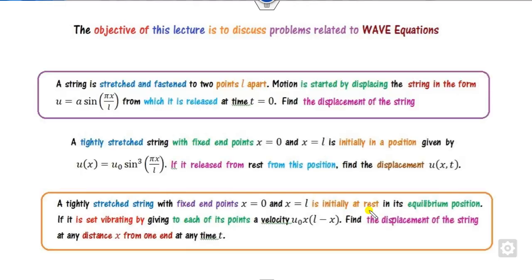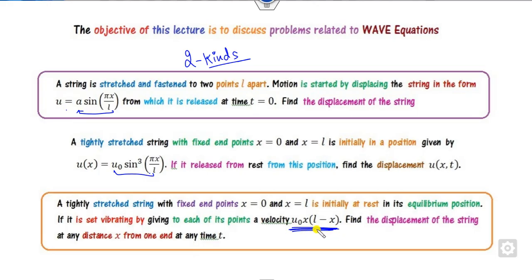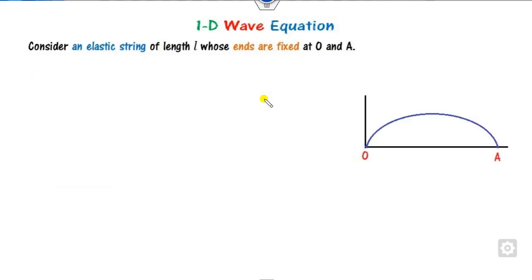The objective is that we will see how we can solve problems related to the wave equation. There are two kinds we will discuss: the first kind is whenever the initial condition is given in the form of sine or cosine, and the other kind is whenever they are given in the form of a polynomial. We will discuss both kinds in this presentation in a very simple manner.